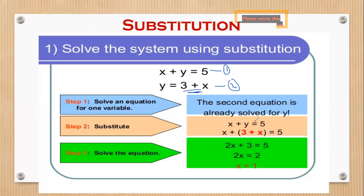In equation 1, we substitute for y as 3 plus x, because from equation 2, y equals 3 plus x. So we substitute 3 plus x where we see y, then go ahead and solve for x, ending up getting x as equivalent to 1. When we substitute for y, the equation only remains in terms of x, meaning we can go ahead and work out the value of x.